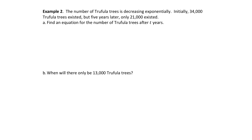A little nod to Dr. Seuss: the number of Truffula trees is decreasing exponentially. The phrase 'decreasing exponentially' indicates we use our exponential growth function model. Initially 34,000 existed, but after five years only 21,000 exist. We want to find an equation for the number of Truffula trees after t years. We know y(0) equals 34,000, but we don't know k.